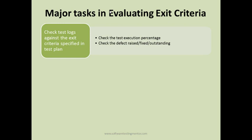The test log is essentially a daily summary report showing what the execution percentage is as of today. You cross-check it with the exit criteria specified in the plan. If the test execution percentage or the defect raised, fixed, and outstanding percentage meets the criteria, then you can exit your test cycle.